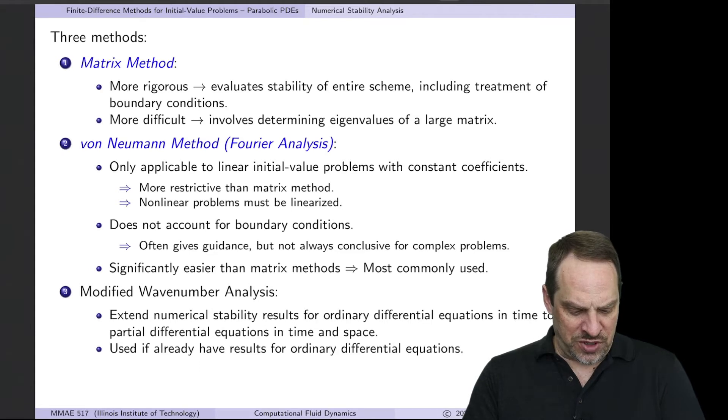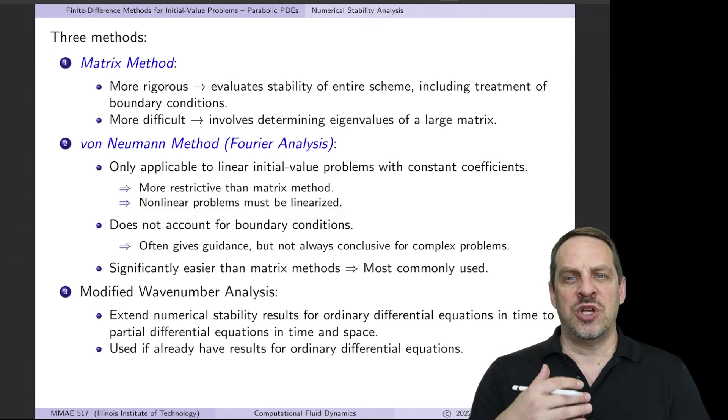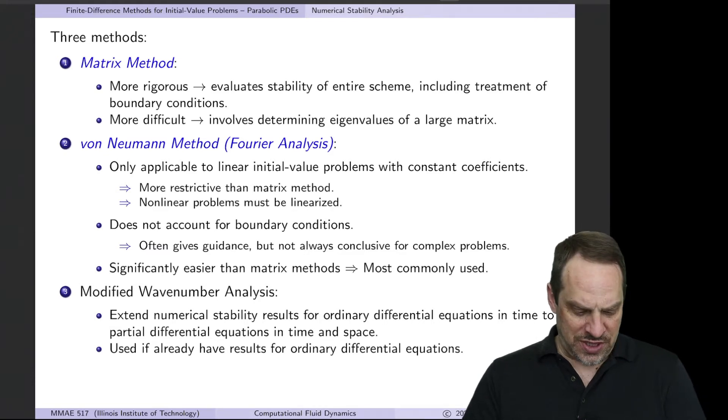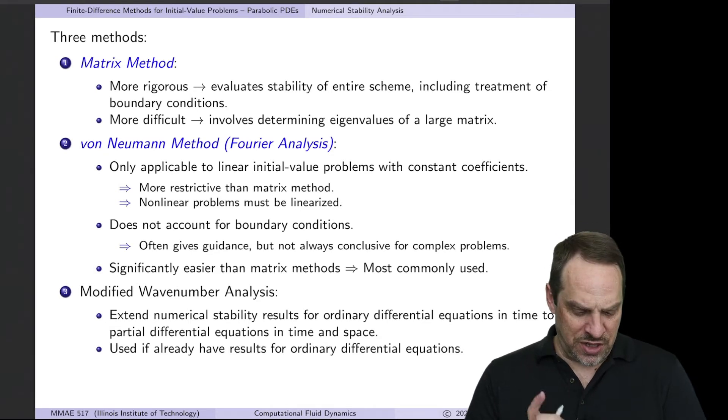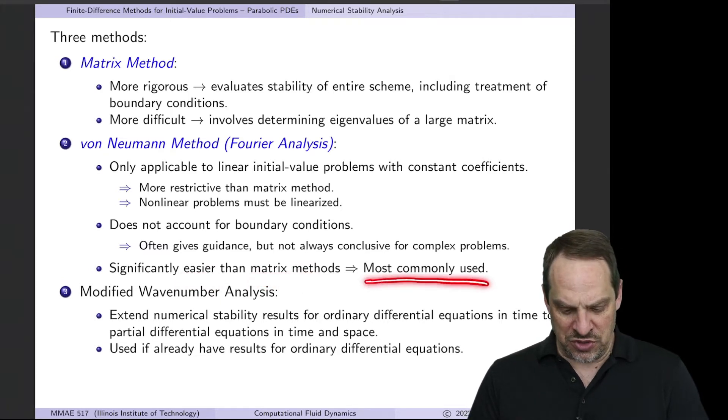The most common form of numerical stability analysis is known as the von Neumann method. It's based on a Fourier analysis. But it's only applicable to linear initial value problems with constant coefficients. So this is more restrictive than the matrix method. If you do have a non-linear problem, then you need to linearize it first before you can do the numerical stability analysis. It does not account for boundary conditions, so it's not as rigorous as the matrix method. But it does give us guidance. It is much easier to perform in general than matrix method. So this is the most commonly used approach.